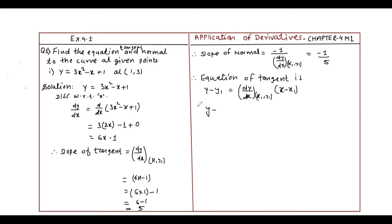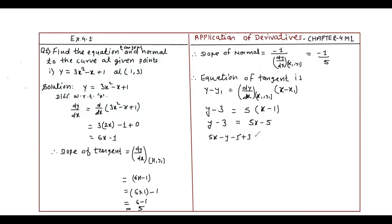Equation of tangent is y minus y1 equals dy upon dx at (x1, y1) into x minus x1. Substituting: y minus 3 equals 5 into x minus 1. Opening the bracket: y minus 3 equals 5x minus 5. Therefore 5x minus y minus 2 is equal to 0. This is the equation of the tangent.